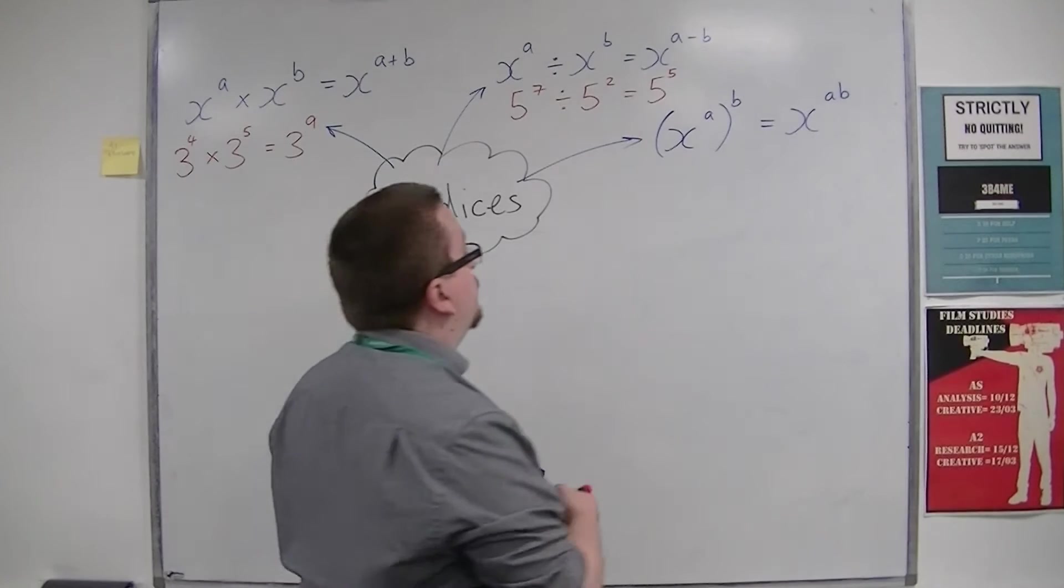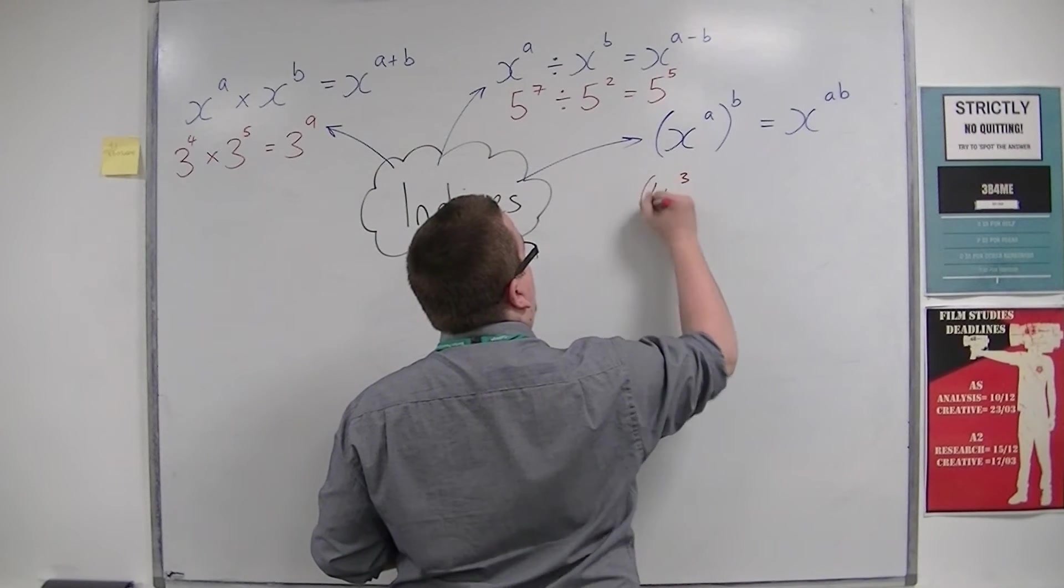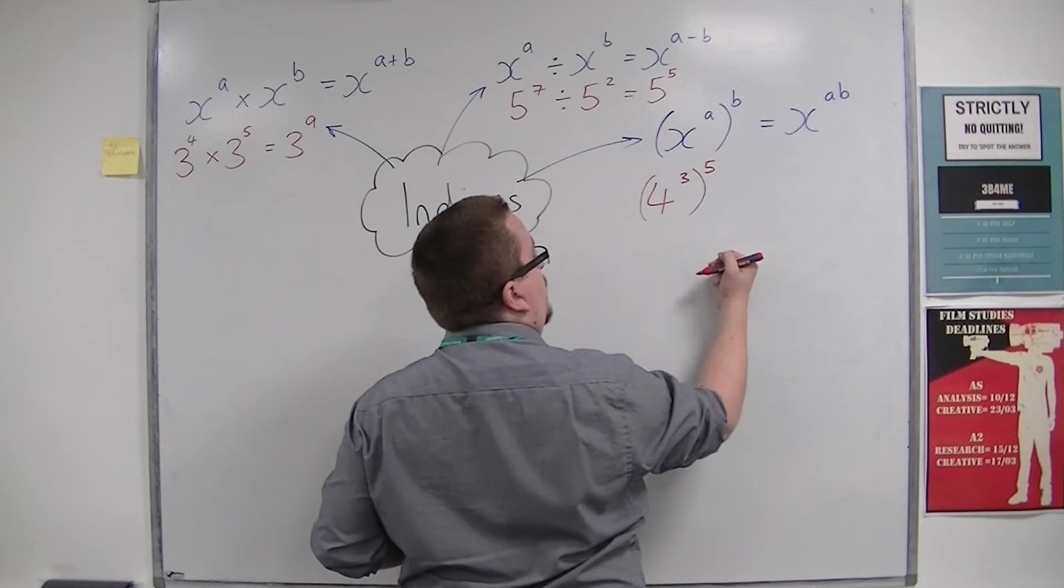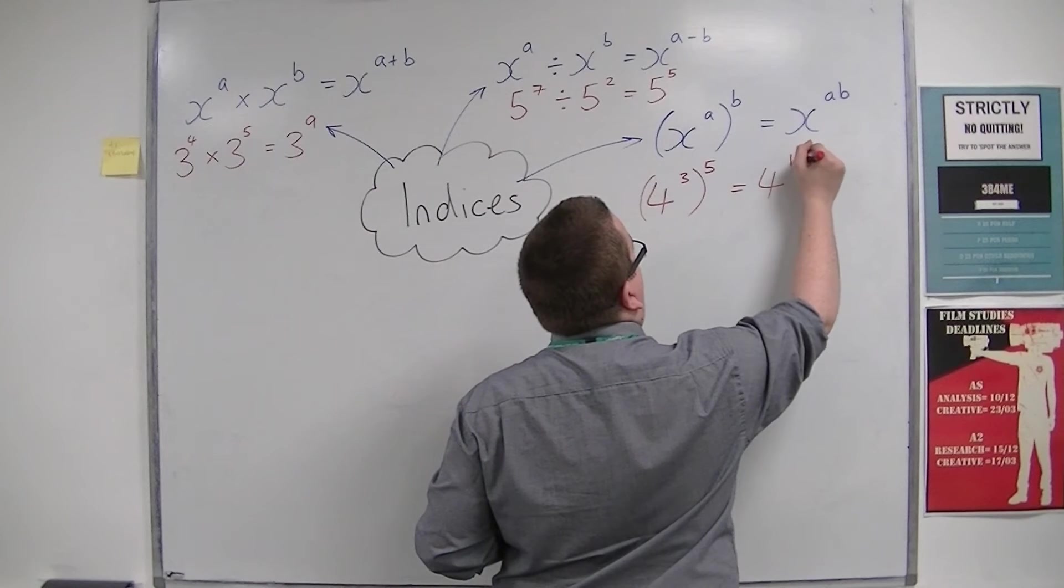For example, if you had 4 cubed and this was to the power of 5, then this would be 4 to the power of 15.